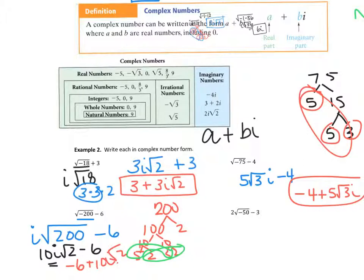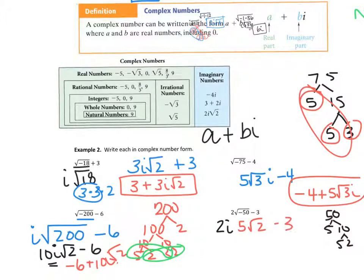The last one is the square root of negative 50. So 50 is 5 and 10, and 5 and 2. That gives a pair of 5s, so this is 5 root 2i. Written in complex form, that's negative 3 plus 5i root 2.